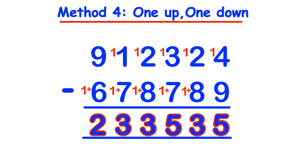Notice how in the original question we deliberately chose the bottom numbers to be greater than the top digits to illustrate the 1 up, 1 down method. As long as you consciously remember that when we put the 1 down with the bottom numbers, we have to add them to those digits. The 1 up, 1 down method can be used on any number of digits from 2 upwards, as long as we remember to fill in any blank spaces with zeros.